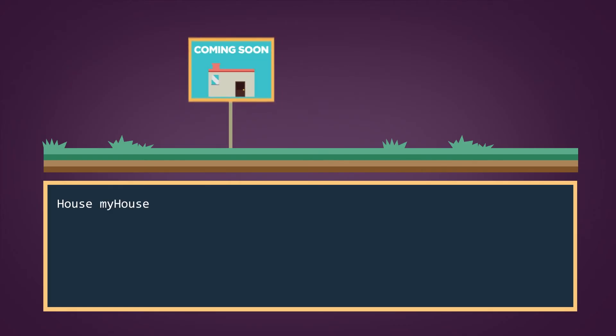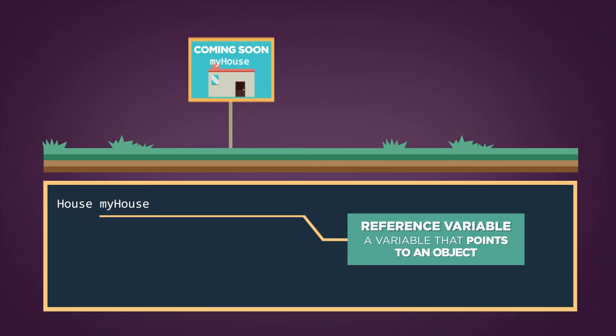Then we give a name for the object. This name is called a reference variable. A reference variable is a variable that points to an object. Think of the reference variable like a street address.